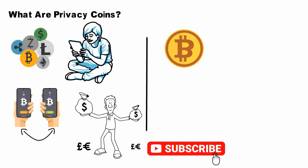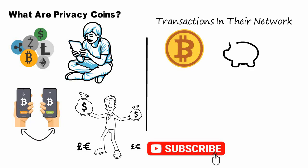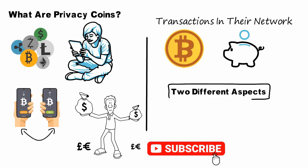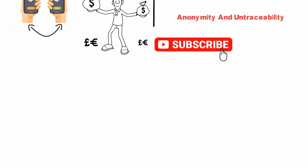In the spirit of transparency, Bitcoin and other non-privacy blockchains allow anyone to view public addresses and transactions in their network, which makes it relatively simple to track someone's deposits and withdrawals. However, privacy coins handle two different aspects: anonymity and untraceability.